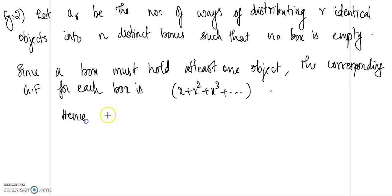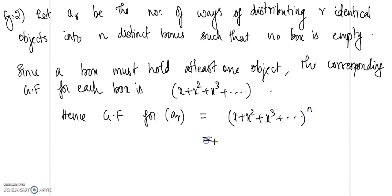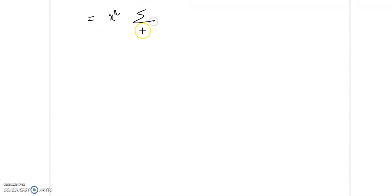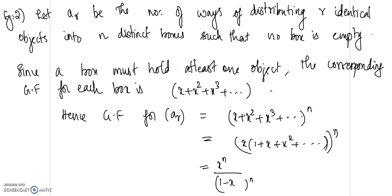The generating function for each box is x + x² + x³ + .... Hence, the generating function for a_r is (x + x² + x³ + ...)^n. This equals (x · (1 + x + x² + ...))^n = (x / (1−x))^n.